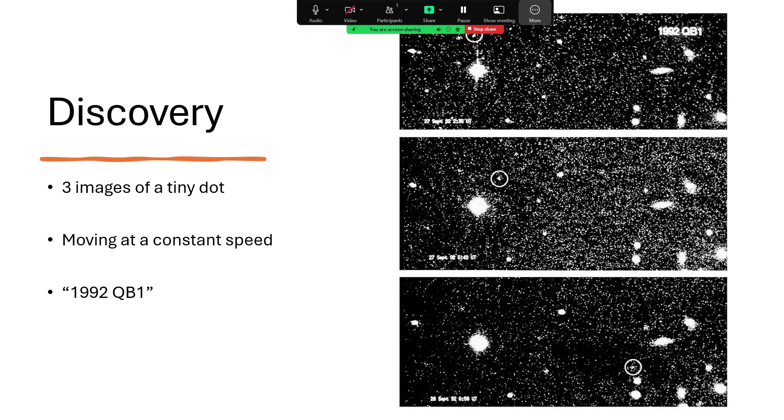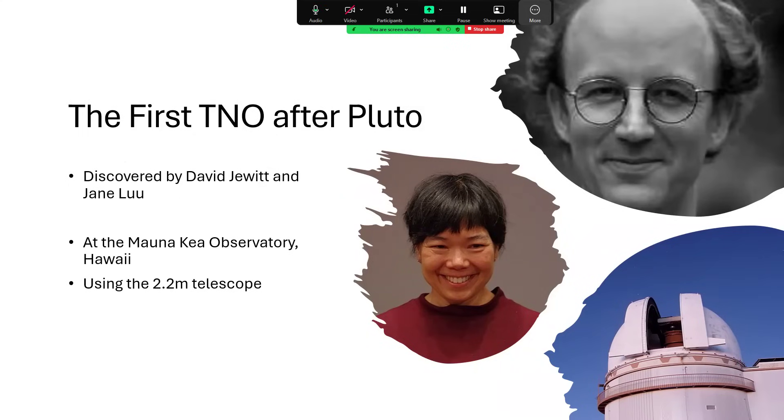This was recognized as the first TNO, trans-Neptunian object, after Pluto. It was discovered by David Jewett and Jane Luu, shown there using the 2.2 meter telescope in the Mauna Kea Observatory in Hawaii. So 1992, well, Pluto was discovered in 1930, so this was 62 years since an object beyond Neptune had been found, so it was quite a breakthrough really.